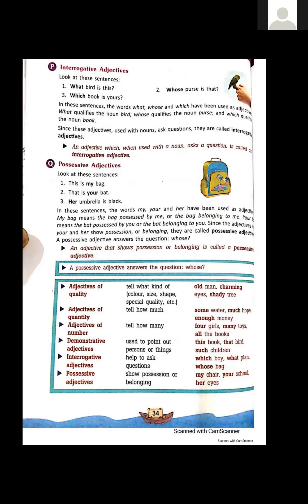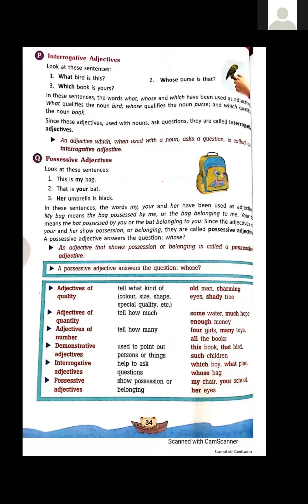In the first sentence we are talking about bird, in the second we are talking about purse, and in the third sentence we are talking about book, and we are asking questions. Since these adjectives are used with nouns — bird, purse, and book are all nouns — these W-family words like what, which, and whose are used with nouns.